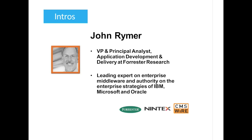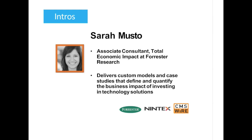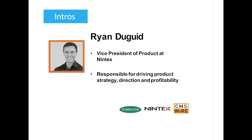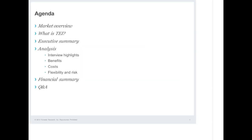It's my distinct pleasure to introduce today's panel. Our first speaker is John Reimer, VP and Principal Analyst for Application Development and Delivery at Forrester Research — a leading expert on enterprise middleware and an authority on enterprise strategies of IBM, Microsoft, and Oracle. Our second speaker is Sarah Musto, Associate Consultant for Total Economic Impact at Forrester Research. Our third speaker is Ryan DeGood, Vice President of Product at Nintex, responsible for driving product strategy, direction, and profitability.